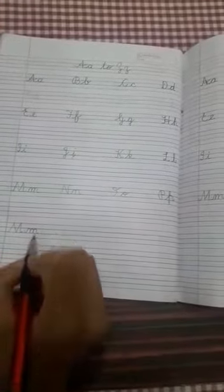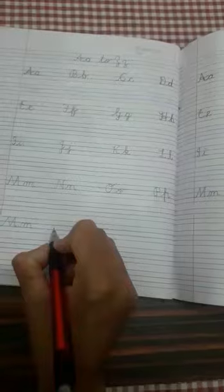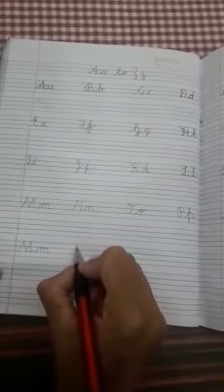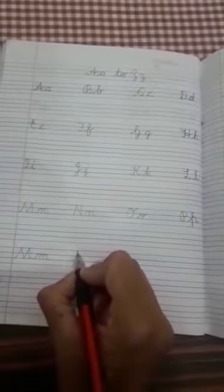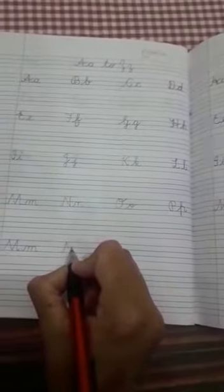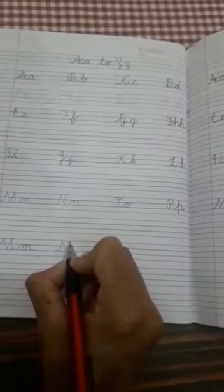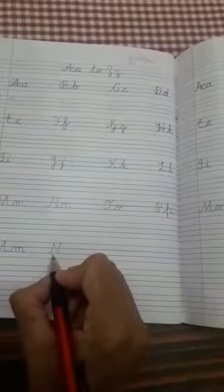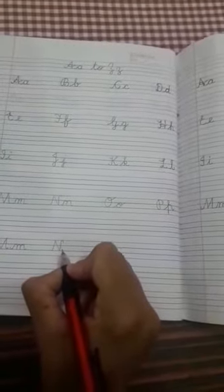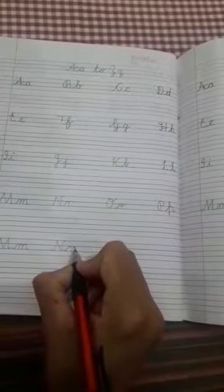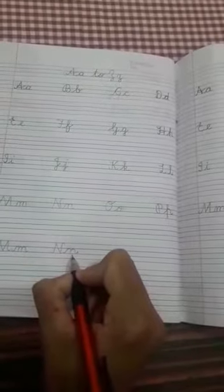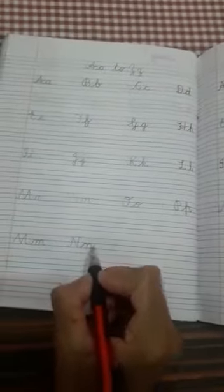Now N. Put the pencil on third line, go up, touch to top line, make a slanting line, then make a standing line and turn. Capital N. Now small N. This is the small N. N for nest.